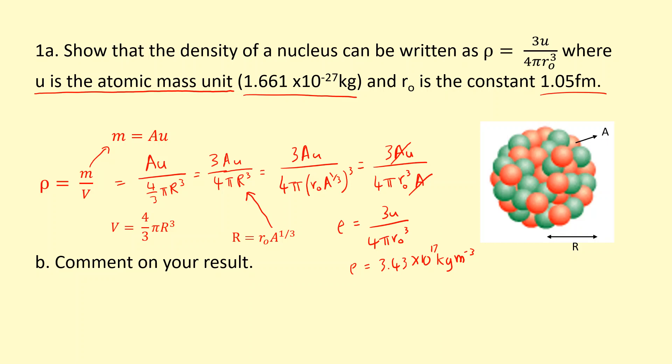Comment on your result. If you look at this equation, you can notice that it's just constants in there. u is a constant, r0 is a constant. So that means the density of the nucleus doesn't depend on the radius or the atomic mass number. The density of the nucleus is constant. It doesn't depend on the nucleon number or the size of the nucleus.